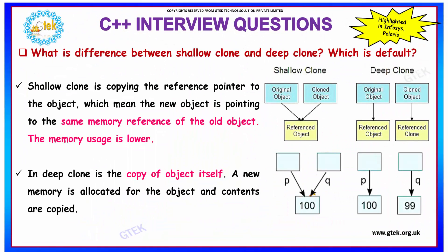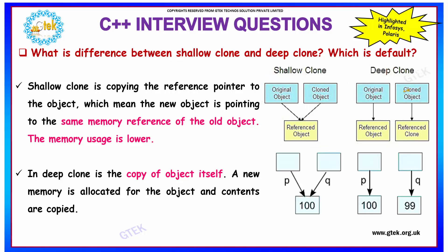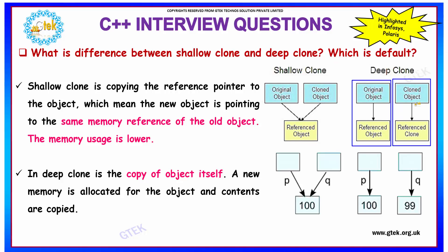What is the difference between shallow clone and deep clone, and which is the default? A shallow clone copies only the reference pointer of the object, meaning the new object points to the same memory reference as the old object, resulting in lower memory usage. In a deep clone, the object produces a full copy of itself — new memory is allocated for the object and its contents, resulting in larger memory usage with a separate memory allocation.